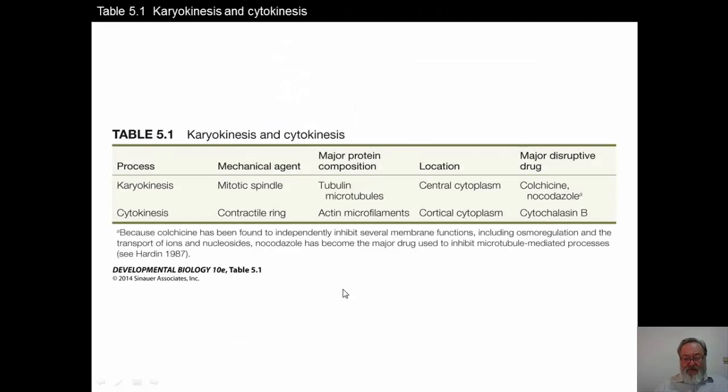This is just a summary of what I just mentioned. The karyokinesis involves the mitotic spindle, tubulin. It's in the central part of the cytoplasm. Experimental studies have been done to show which of those proteins are involved in karyokinesis and cytokinesis by knocking out the proteins.